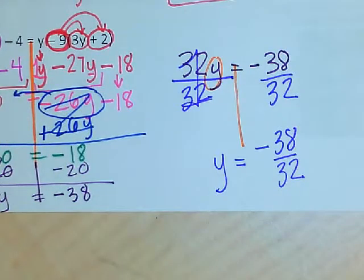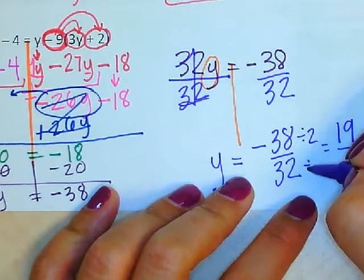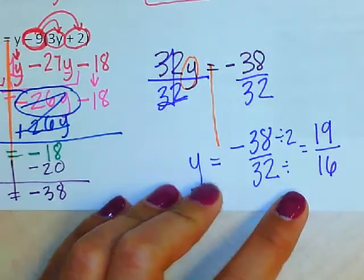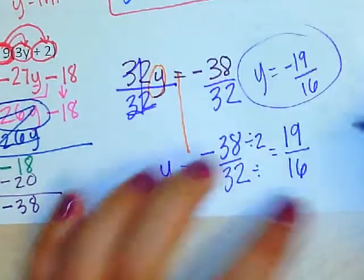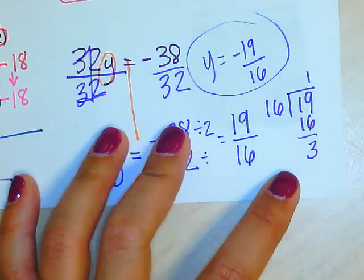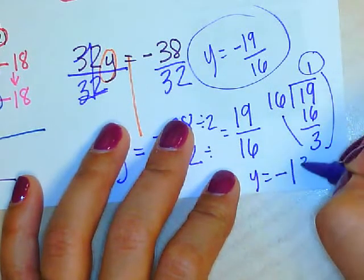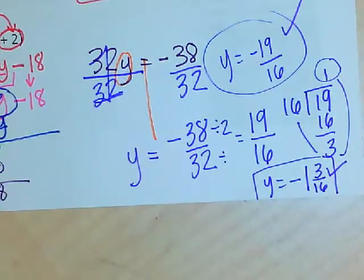Now I just need to simplify. Both are even, so I can divide by 2. Half of 38 is 19, and half of 32 is 16. I can leave it this way - y equals negative 19 over 16. Or I can convert it into a mixed number - negative 1 and 3 sixteenths. So both answers are correct: y equals negative 19/16 or negative 1 and 3/16.